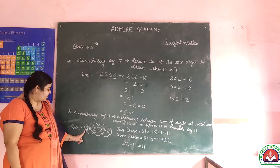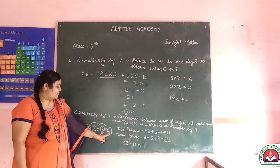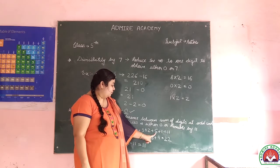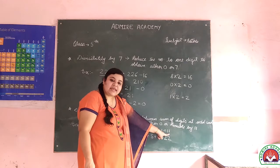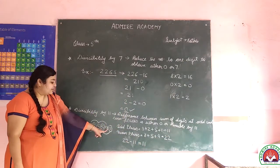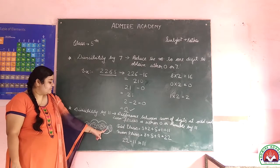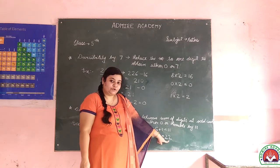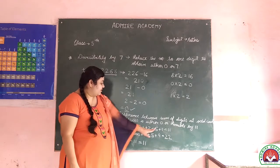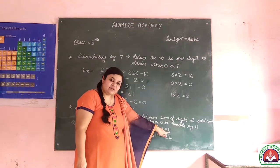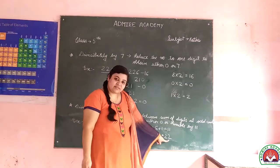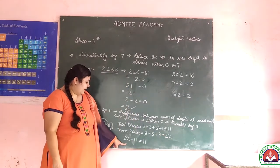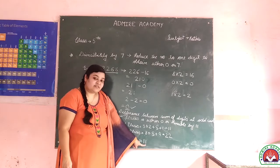Now we sum the digits. For odd places, the digits are 3, 2, 5, 1. So 3 plus 2 plus 5 plus 1 — the answer is 11. Now we sum the even place digits: 8 plus 5 plus 9 — the answer is 22. Now we subtract: 22 minus 11. The answer is 11. And 11 is divisible by 11. If the answer were 0, we could also say the number is exactly divisible by 11.